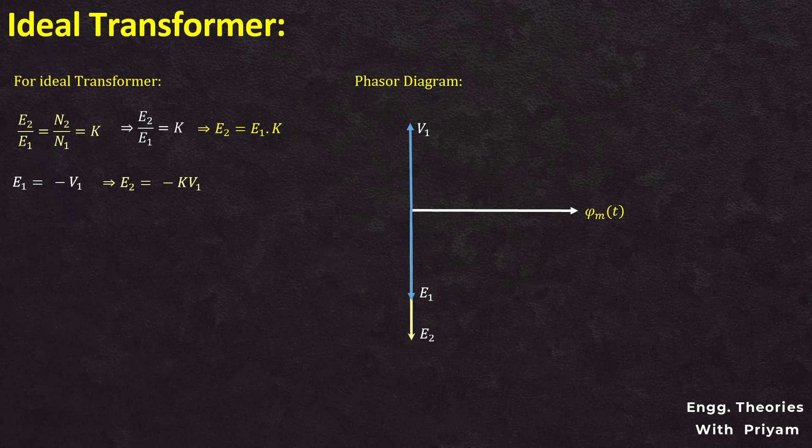The magnetizing current I_mu is purely inductive; in other words, it lags the supply alternating voltage V1 by an angle of 90 degrees and is very small in magnitude.